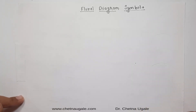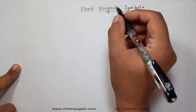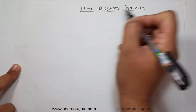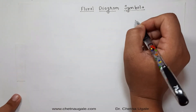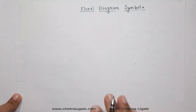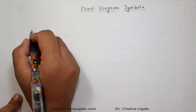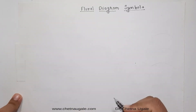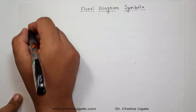Good morning students. Today we are going to learn the floral diagram symbols. These are signs which are generally used to describe the floral diagram. There are different symbols, so let's see them one by one.